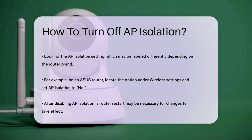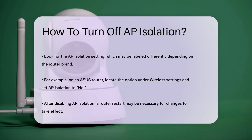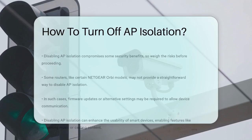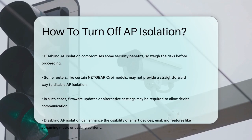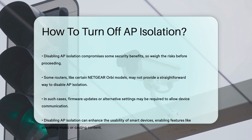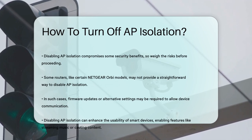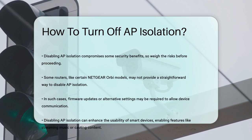It's important to note that you may need to restart your router after making these changes. Also be aware that disabling AP isolation does reduce some of the security benefits, so make sure you're comfortable with the trade-off. In some cases, like with certain Netgear Orbi models, the option to disable AP isolation might not be straightforward or even available through the standard web interface or app. You might need to look into specific firmware updates or alternative settings.